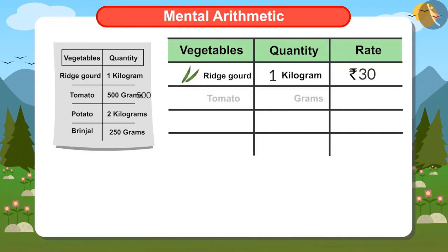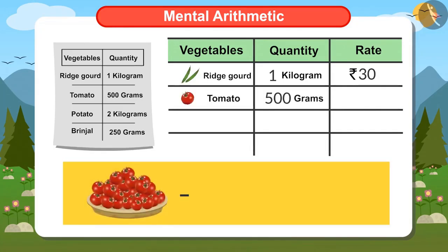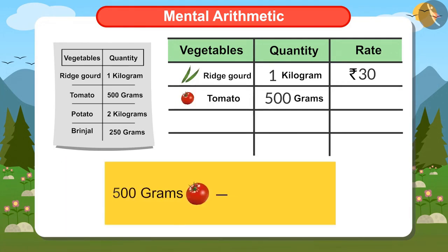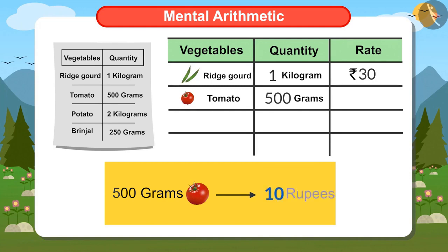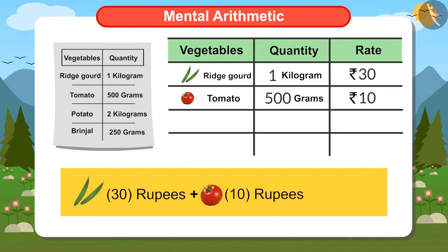I have also bought half a kilo of tomatoes, and the price of tomatoes is 20 rupees a kilo. This means that to find the cost of half kg of tomatoes, I have to divide 20 by 2. Two tens are 20, which means 10 rupees is the cost of half kg of tomatoes. Ridge guard and tomato cost 40 rupees.